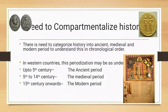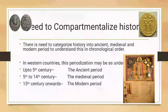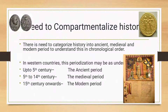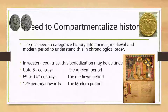Now, there is a need to compartmentalize history into ancient, medieval, and modern periods. The need to compartmentalize or periodize history into ancient, medieval, and modern periods is necessary to understand it in chronological order. We have divided it into three periods: ancient, medieval, and modern. However, all the changes were not seen all over the world at the same time — somewhere it was earlier, somewhere it was later. In Western countries, the periodization may be as follows.